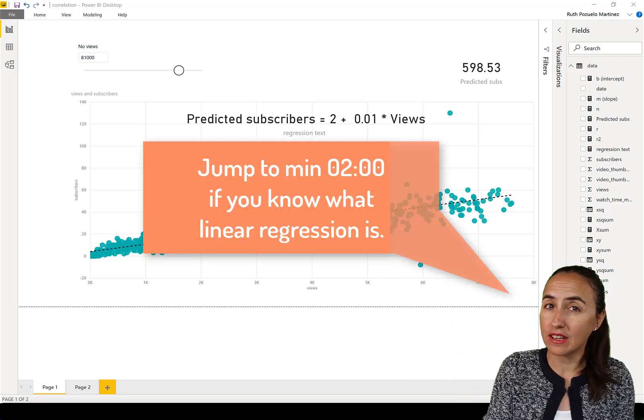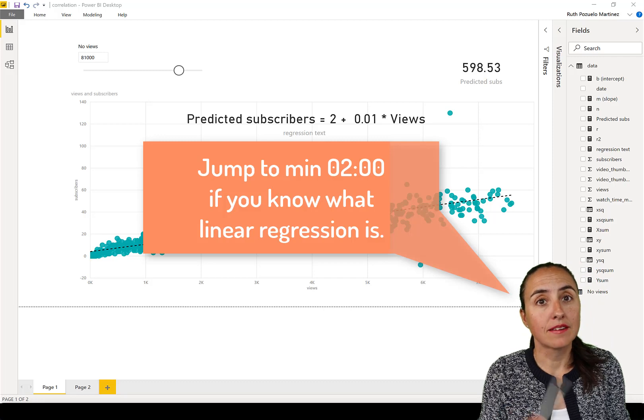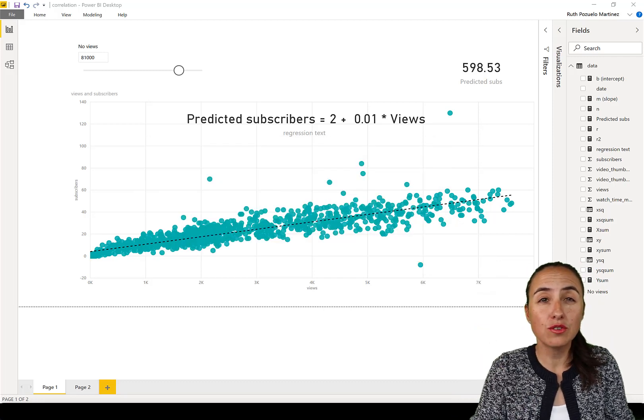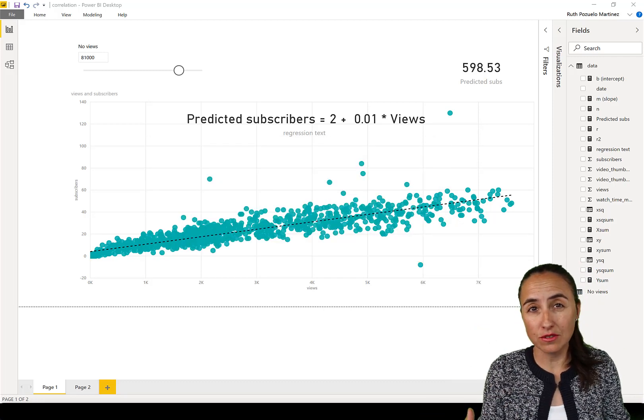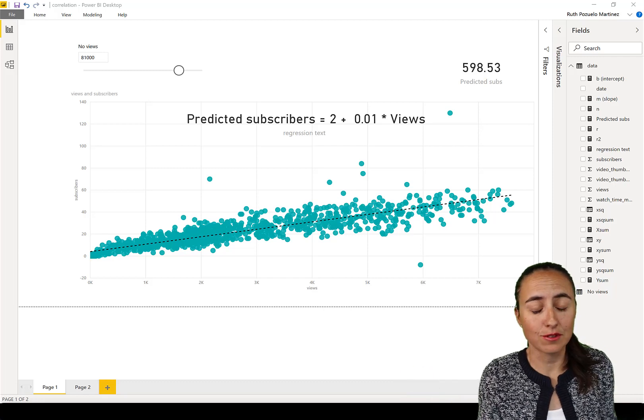There is no function for correlation, you have to calculate it manually, but I'm going to show you how to do it and I'm going to show you what correlation is and what you can use it for and why is it useful.